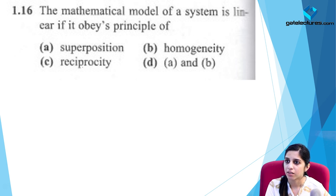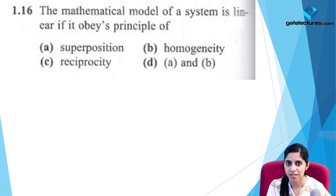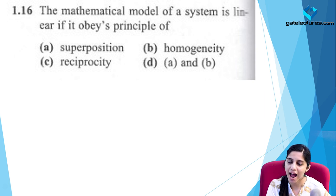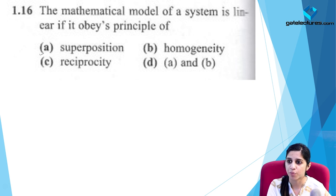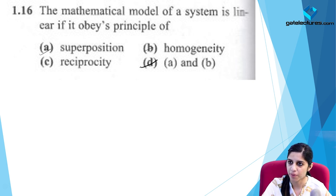The mathematical model of a system is linear if it obeys the principle of homogeneity and superposition. Homogeneity means multiplying the input by a constant multiplies the output by the same constant. Superposition means adding two inputs produces the sum of their individual outputs. The correct option is D: both A and B.